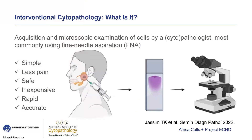Starting with the basics: interventional cytopathology is when a pathologist or cytopathologist obtains a cytologic specimen and also examines those cells under the microscope, usually using fine needle aspiration to acquire those cells. FNAs are simple procedures that are less invasive and easier to perform than core or excisional biopsy. They tend to result in less pain and discomfort given the smaller needle size used. They are very safe, relatively inexpensive, rapid—with the procedure lasting only seconds and a diagnosis available minutes after specimen collection—and FNA accuracy is high, providing very helpful information for patient management.